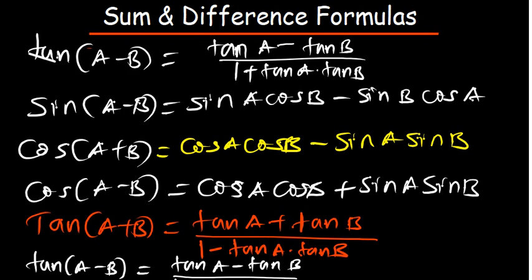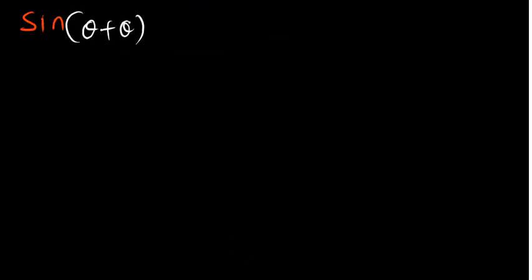Now let's assume A and B are just basically the angle. So if the angle is theta, and we have sine of theta plus theta, we can see that theta plus theta is 2 theta.